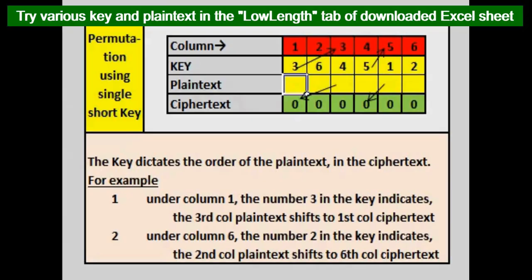We will now permute our plaintext, say SECRET, using a key 3 6 4 5 1 2. The contents of plaintext will be rearranged as per the numeric order of our key. Third alpha comes first, sixth alpha next and so on. With this, CTRESE becomes our ciphertext. This kind of permutation is one of the key factors in encryption process.